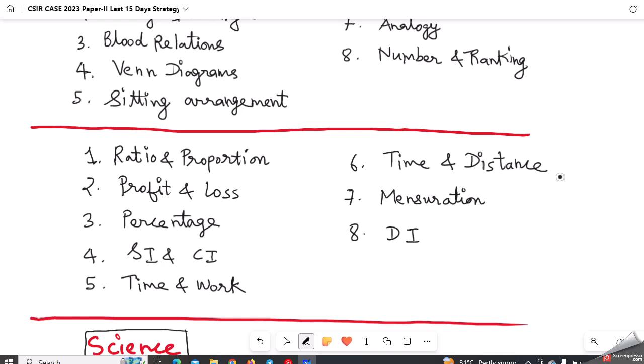In case of aptitude, the syllabus is very straightforward. Do prepare these eight topics diligently: ratio proportion, profit loss, percentage, simple interest and compound interest, time and work, time and distance, mensuration, and data interpretation. Cover these in the remaining days and work on your speed while preparing these topics from aptitude.